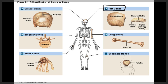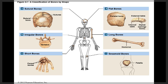The next bone shape is flat bones. Flat bones are thin and broad. Several examples of flat bones are the skull bones, as well as the ribs and the shoulder blade, which is called the scapula, and the sternum, which is the breast bone.